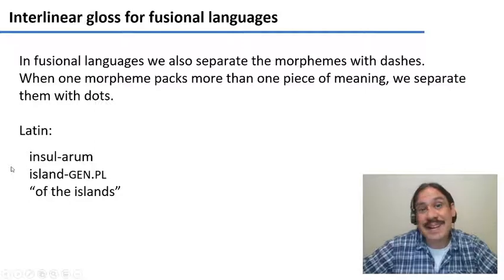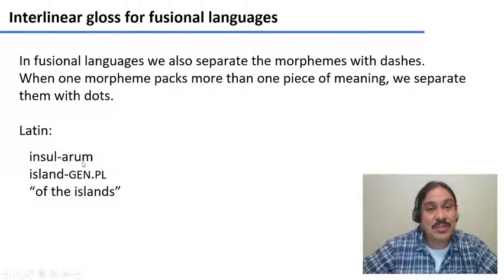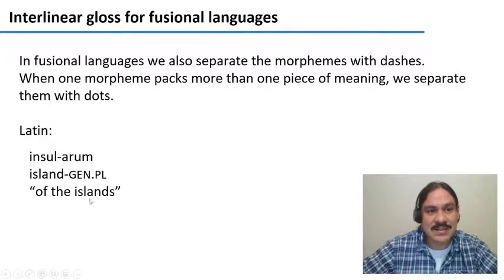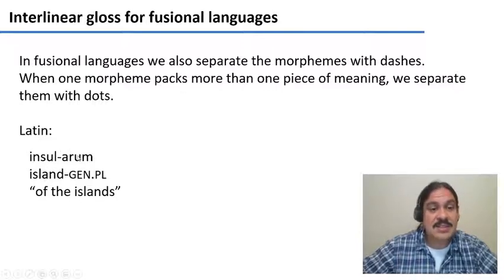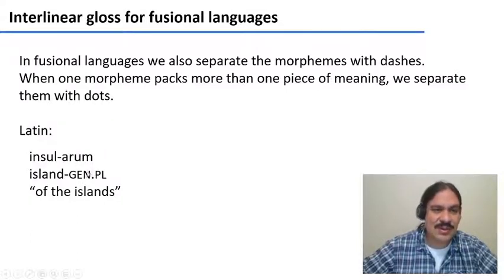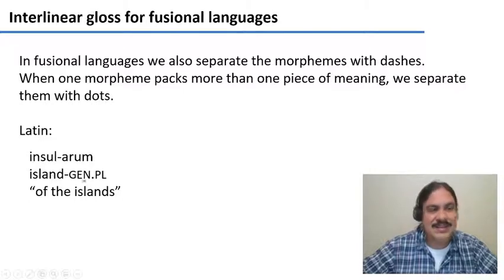Many languages do this. In Latin, for example, the word 'insularum' means 'of the islands.' It has two morphemes: the root 'insul' meaning island, and the suffix 'arum', which is the genitive plural — of the islands.